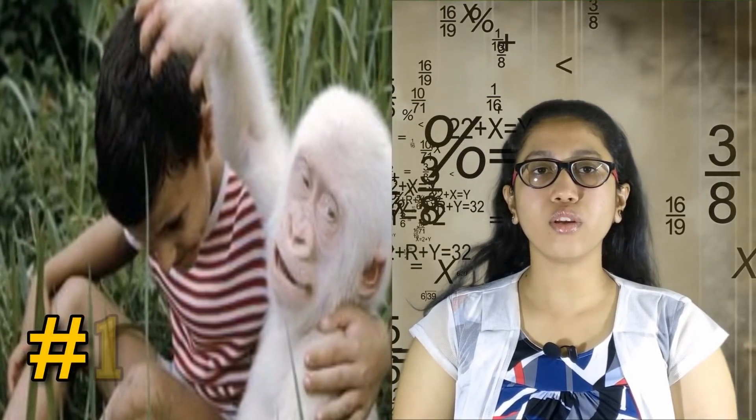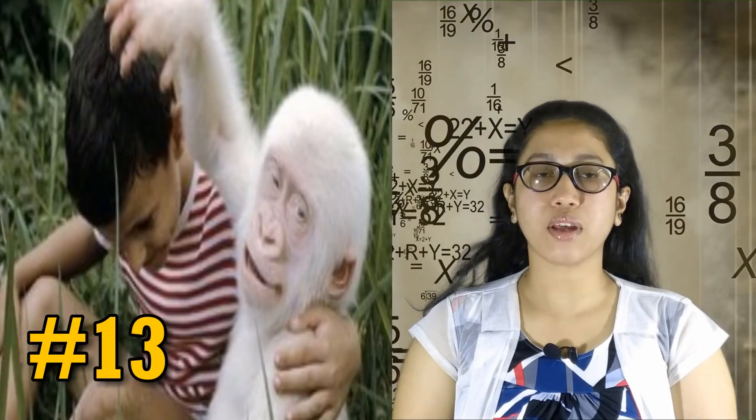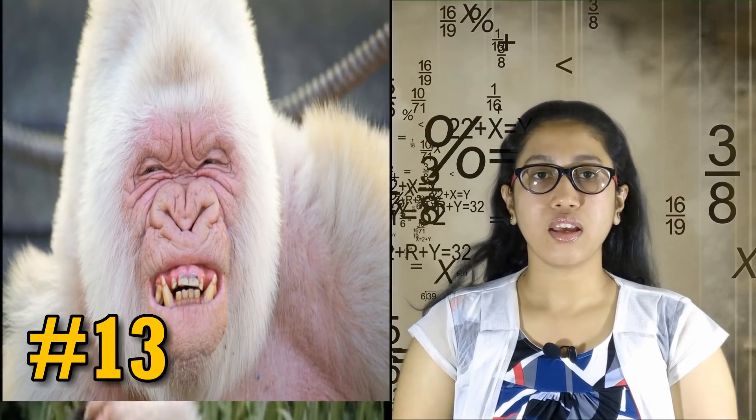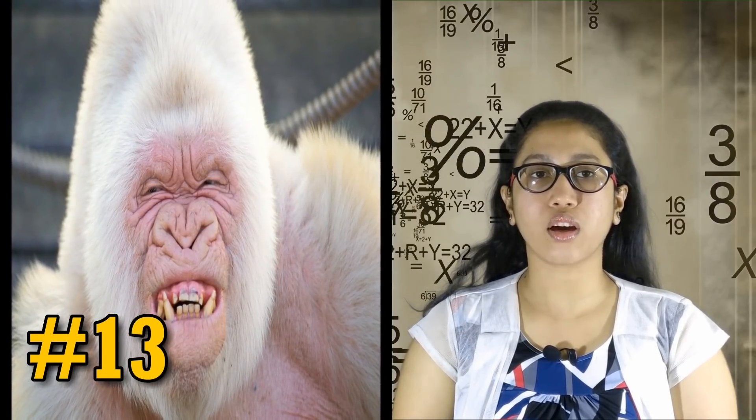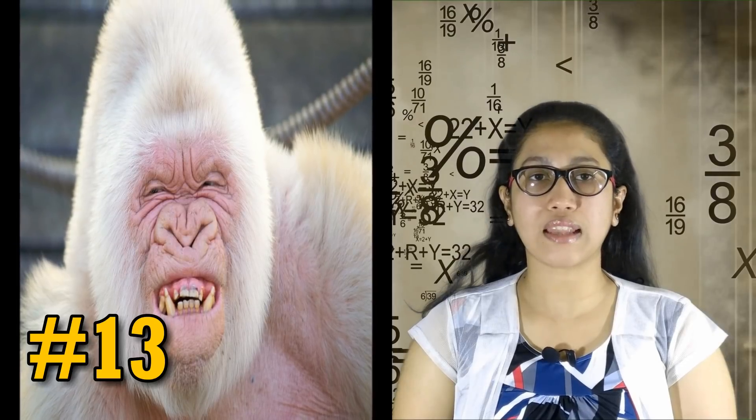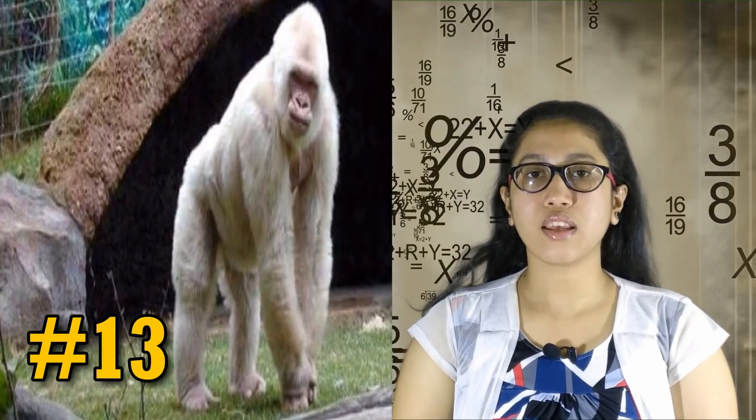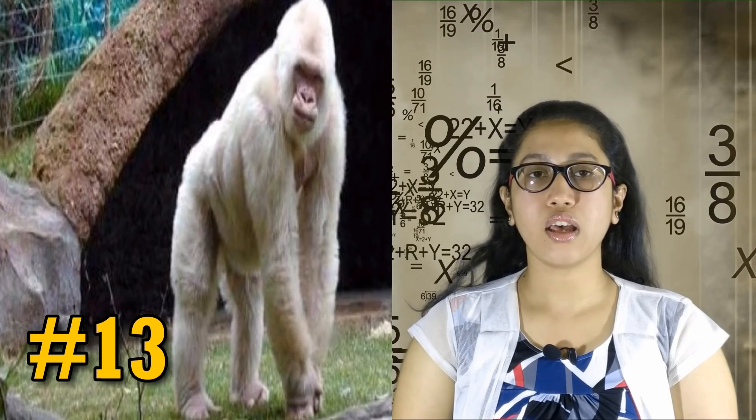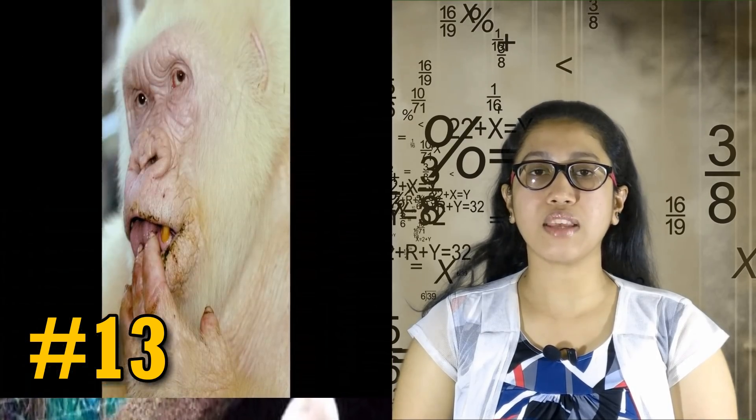Snowflake was the only known albino gorilla ever seen and spent his time at the Barcelona Zoo in Spain. He lived a long life eventually succumbing to an unusual form of skin cancer. He fathered 22 offspring, seeing only 6 make it to adulthood and not one of them sharing his amazing skin tone.